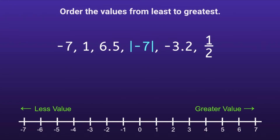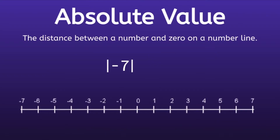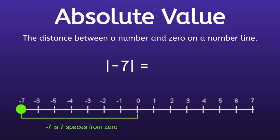The first one is the absolute value of negative 7. You may be asking what do the bars mean around the negative 7. They mean absolute value. An absolute value is the distance between a number and 0 on a number line. In order to find the absolute value of negative 7, we would graph negative 7, then count the number of spaces from negative 7 to 0. There are 7 spaces, so the absolute value of negative 7 is 7.